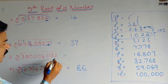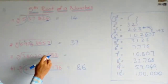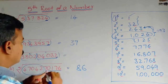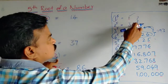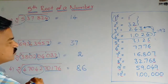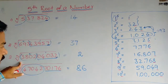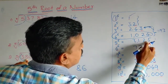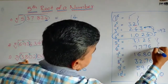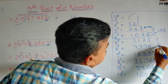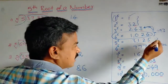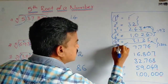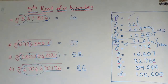In the third example, we make groups: one group of five digits and a second group of four digits. The first group ends with 2, and since a number ending in 2 has a fifth root also ending in 2, we write 2 in the units place. The second group is 3,802. It lies between 3,125 and 7,776. The smaller fifth power is 3,125, whose fifth root is 5. So we write 5 in the tens place. The answer is 52.